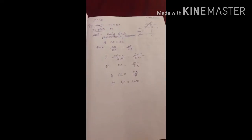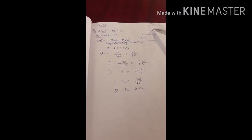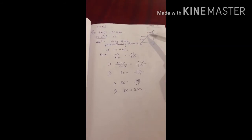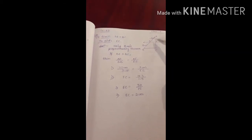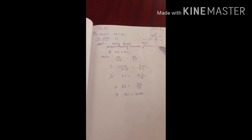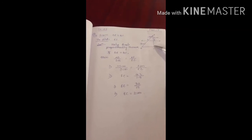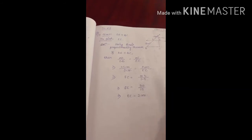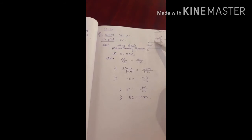Now let us start the exercise questions. In question 1, a diagram is given and DE is parallel to BC. The lengths of the sides are given — AD is 1.5 cm, DB is given. We have to find the value of EC. We are using the basic proportionality theorem: if DE is parallel to BC, then we can write AD/DB = AE/EC.